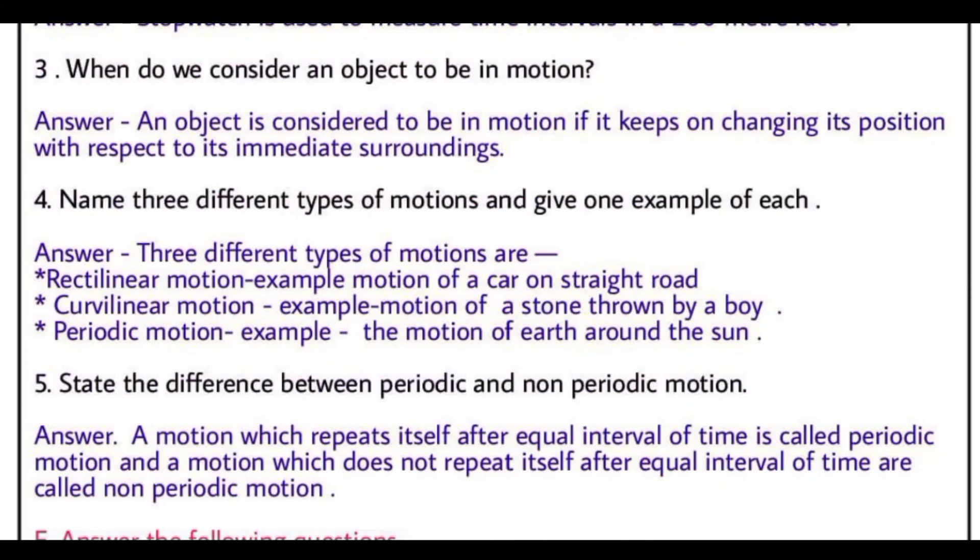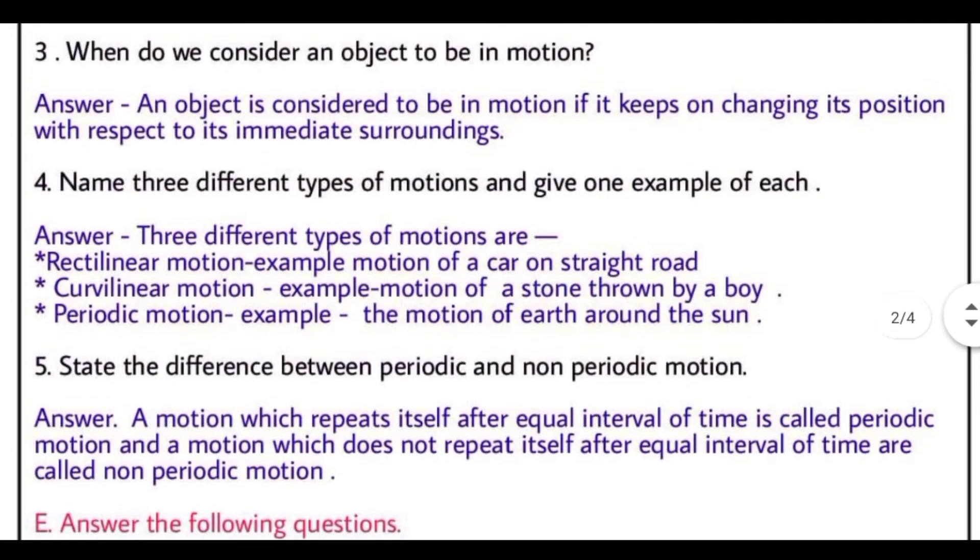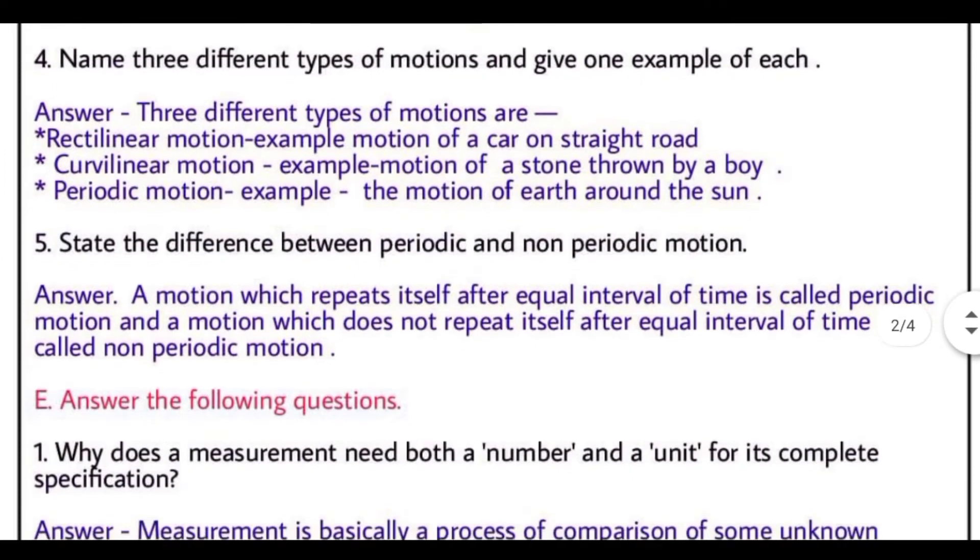When do we consider an object to be in motion? The answer is, an object is considered to be in motion if it keeps on changing its position with respect to its immediate surrounding. Koi bhi object motion mein hota hai, agar woh apna position change kar raha hota hai, apne immediate surrounding ke respect mein. Name three different types of motion and give one example of each.